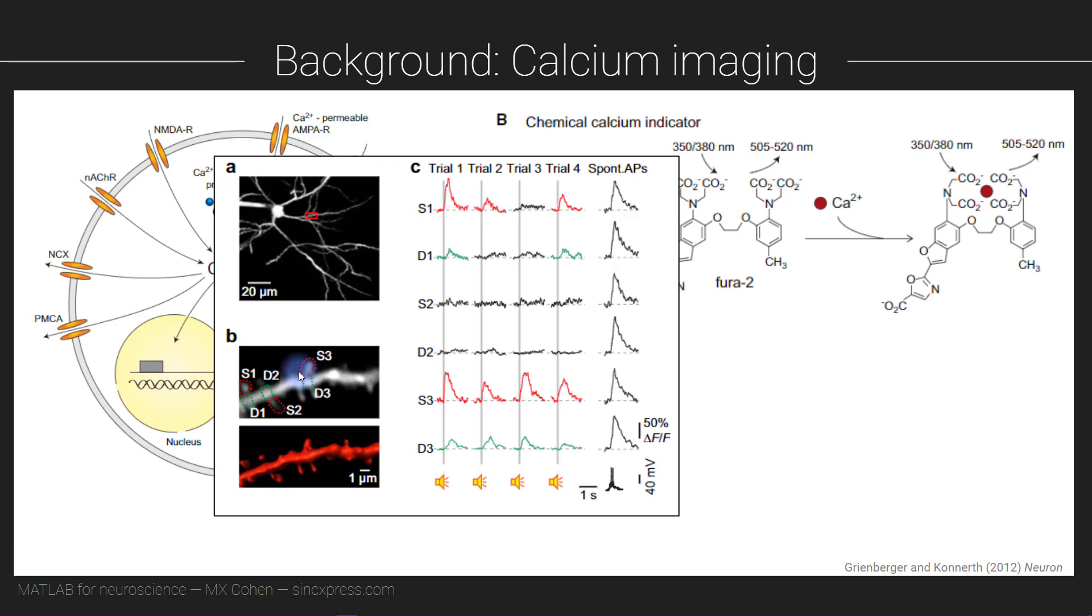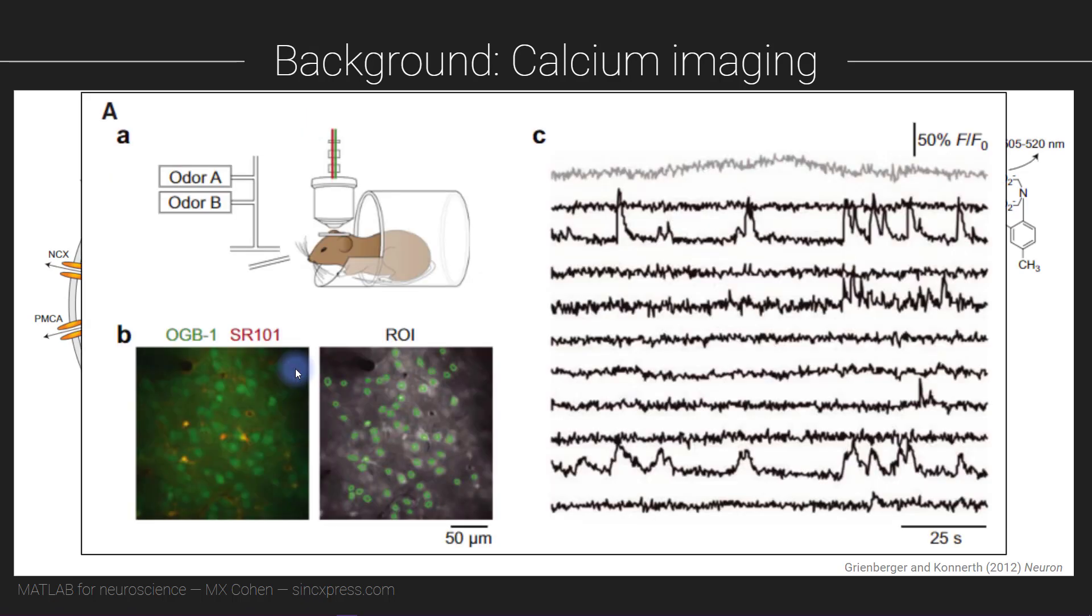Here you see calcium dynamics zoomed out to a larger area of the brain. Each of these little green circles corresponds to the cell body of a neuron, and each of these traces, each of these time courses, is the calcium time series from an individual neuron.